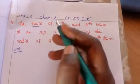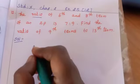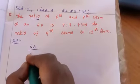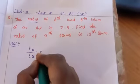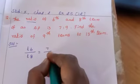Ratio means what? Division. So ratio of 6th term and 8th term, that is T6 divided by T8 equal to 7 divided by 9.